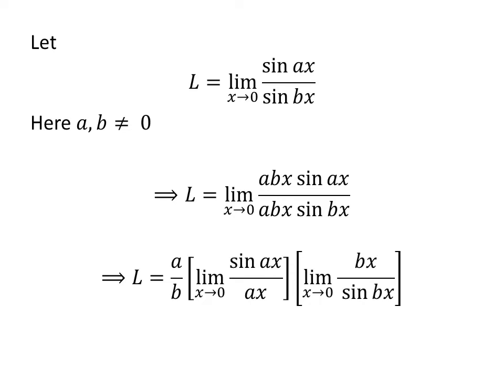As a upon b is a constant, we can write the above expression as l is equal to a upon b times the limit of sin of a times x upon a times x as x approaches 0, times the limit of b times x upon sin of b times x as x approaches 0.